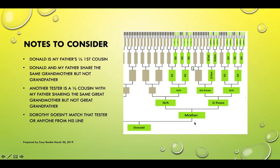We're only going to go to whoever is in green. If they're grayed, Donald did not get any XDNA from that person. His mother is green, so he got XDNA from her. Now we're at a crossroads: do we go to Donald's grandmother or his grandfather?